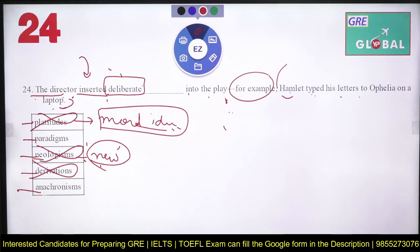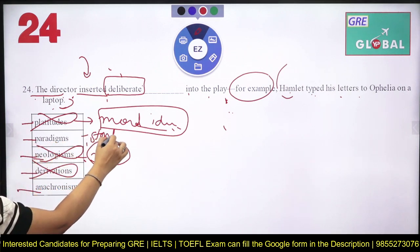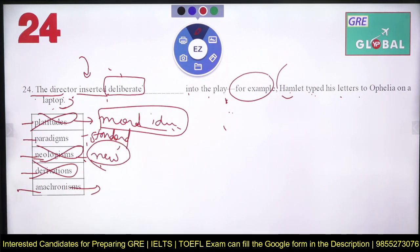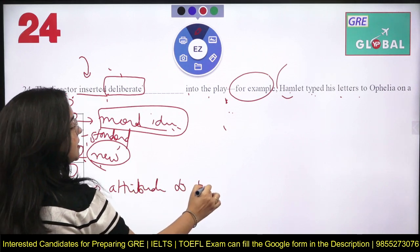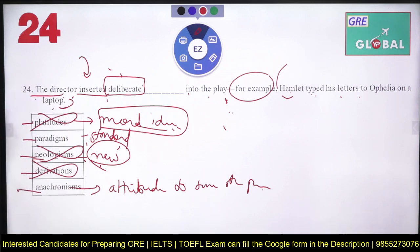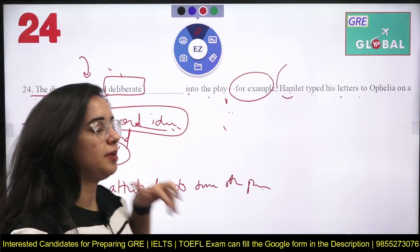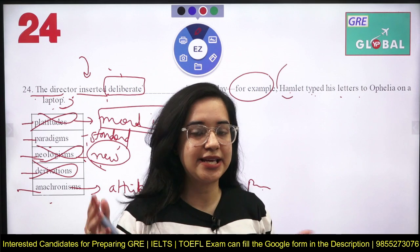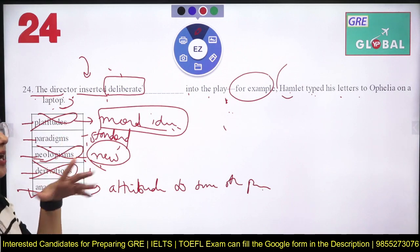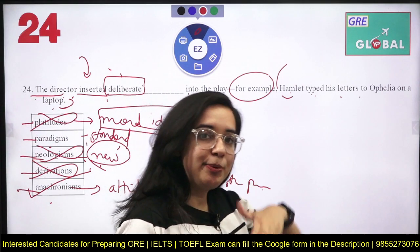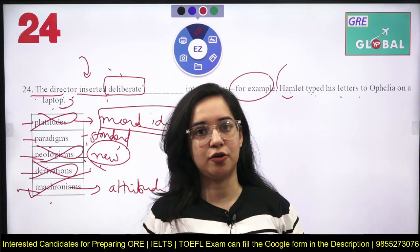Paradigm means something that is a model or standard idea. Anachronism means when there is a thing that belongs to a period other than the one in which it is exhibited — attributing something to the wrong time period. Doh periods ka difference hona chahiye. Here, a laptop does not belong to the 16th century — so maybe the director is adding anachronisms, attributes that belong to a different period but are being fixed into this one.